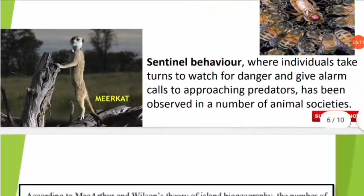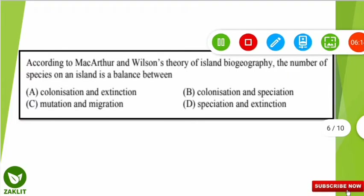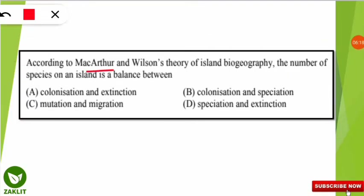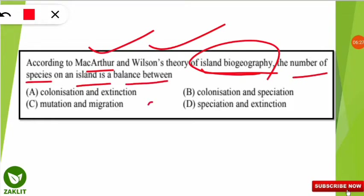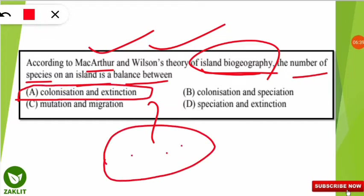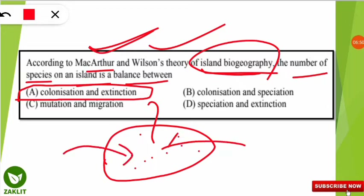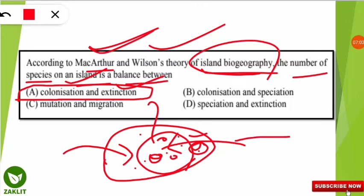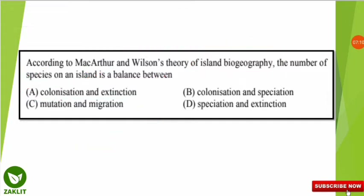Moving to the next question: according to MacArthur and Wilson's theory of island biogeography, the number of species on an island is balanced between what? The correct option is A — colonization and extinction. According to their theory, if we consider an island, the growth of plants and animals there results from a balance between colonization — when organisms come and form colonies — and extinction, when species die out. This incoming and outgoing dynamic maintains the balance of species number on an island.